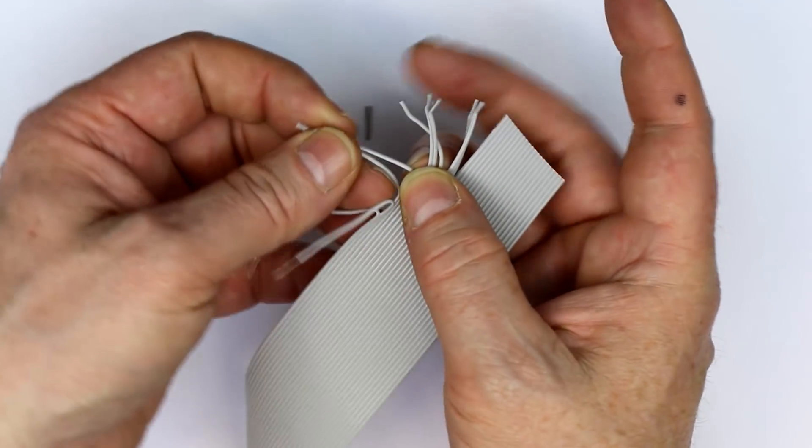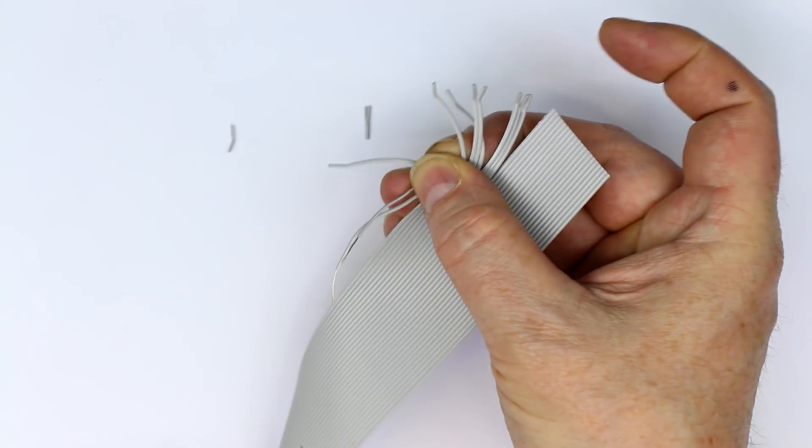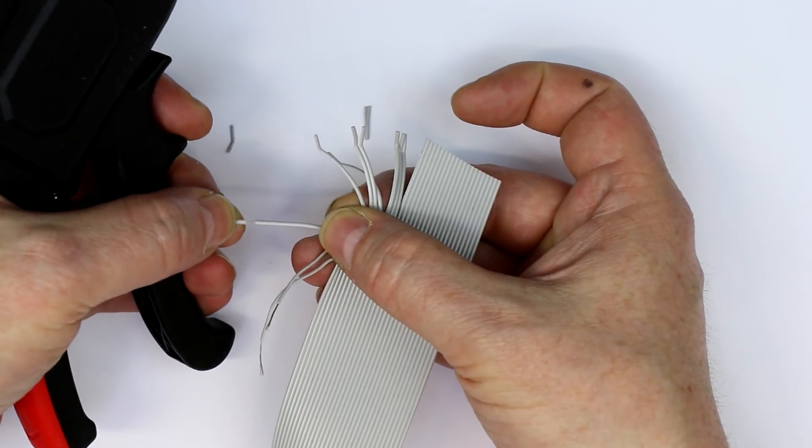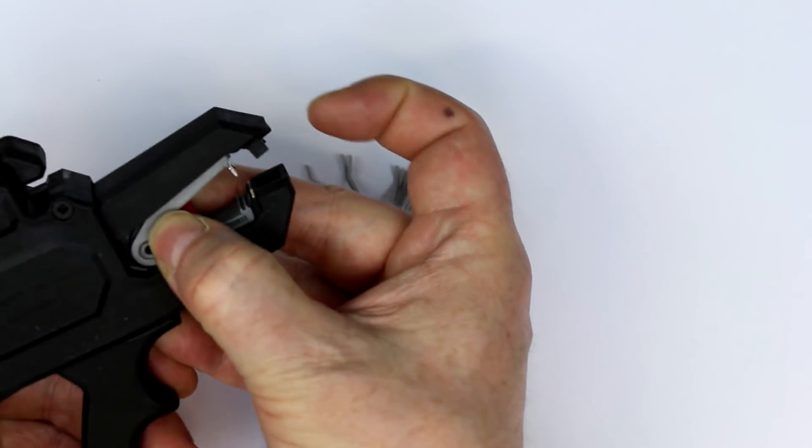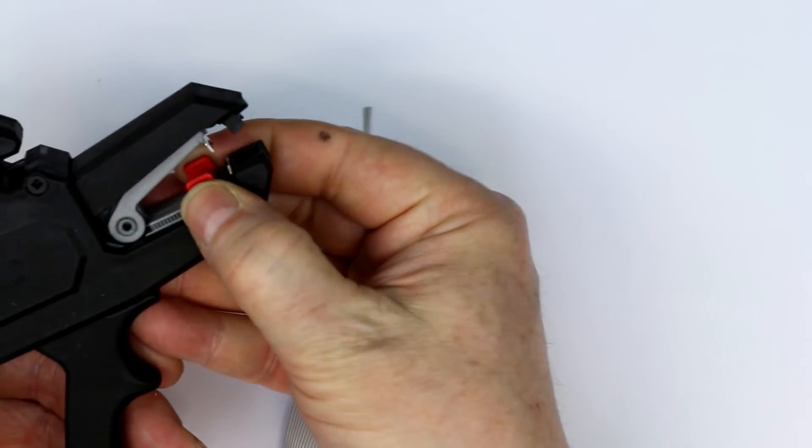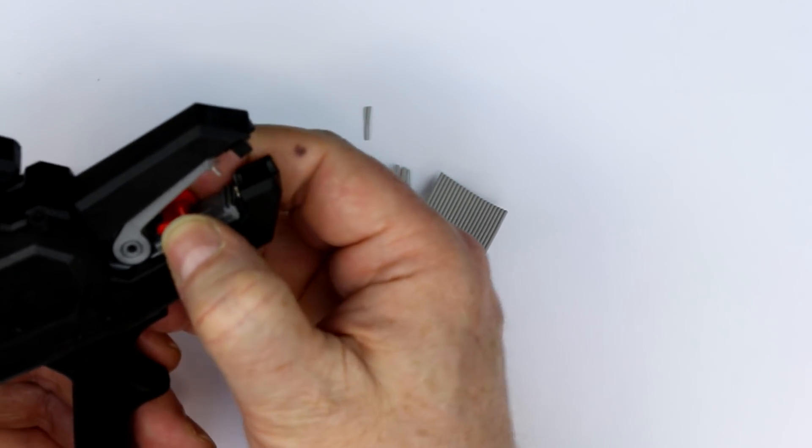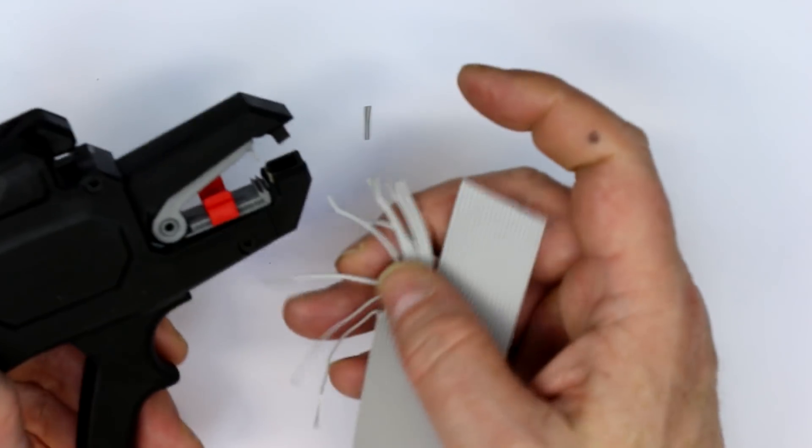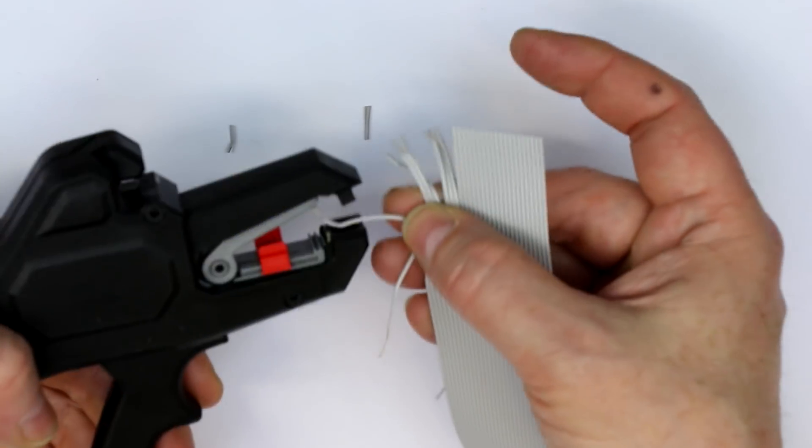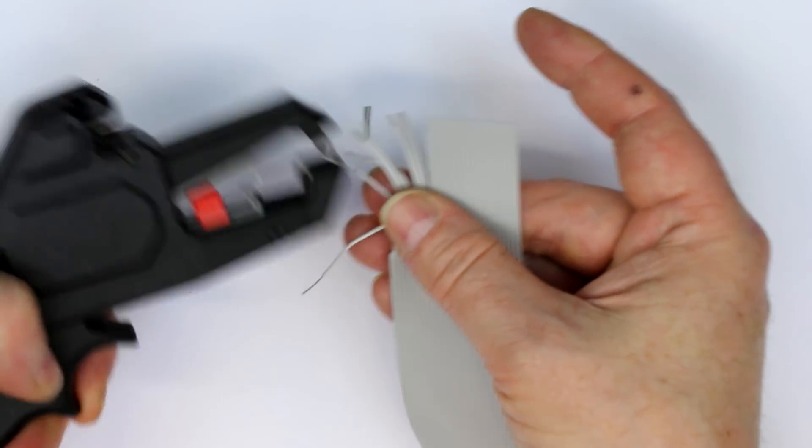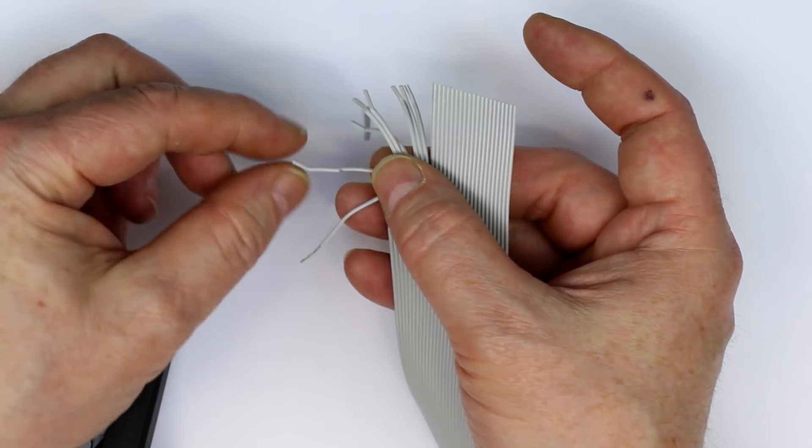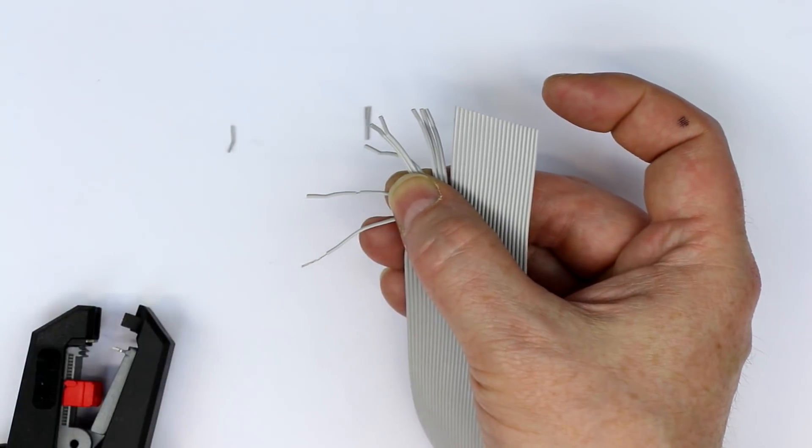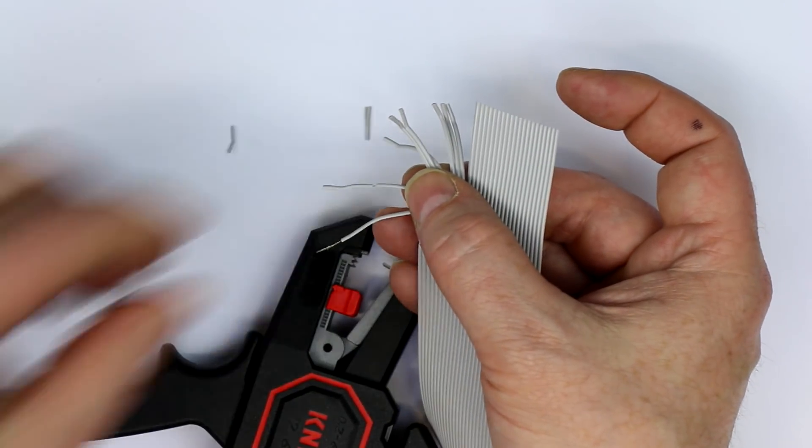Now comes the cheaper KNIPEX. Yeah, you see, it did cut, but it didn't strip fully. It might have been because I didn't set this little thingy here. Let's try it a second time. Yeah, you see, same result. It cuts and draws the isolation a bit out, but it doesn't do just as good as the Bicon, which was perfect.